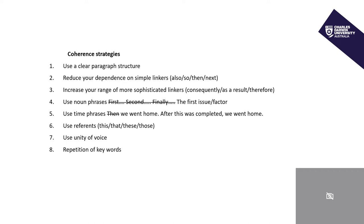Points four and five involve changing one word to a phrase. In the first example, instead of using first, second or finally, you can use a noun phrase such as the first issue, the first factor, the first challenge, or the first point — this is helpful for variety in your writing. Time phrases replace words like then. So instead of saying then, you can use a phrase such as after this was completed, we went home — a more sophisticated way of saying then we went home.